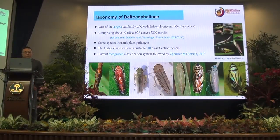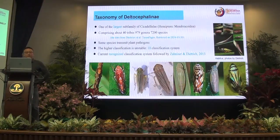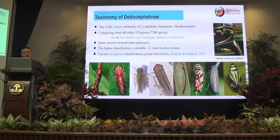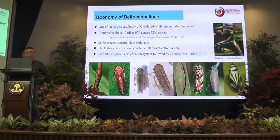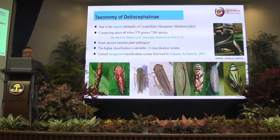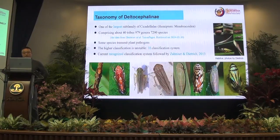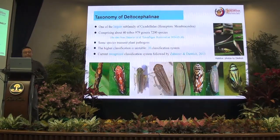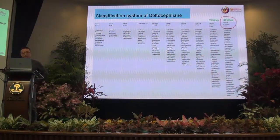Firstly, I will introduce the taxonomy of Deltocephalinae. Deltocephalinae is one of the largest subfamily of Cicadellidae. It comprises about 40 tribes and 17 genera, 7200 species. Deltocephalinae is a taxonomically complex taxon. Subspecies are transmitted as plant pathogens. The higher classification is unstable, with 10 classification systems. The current recognized classification system is that followed in 2013.